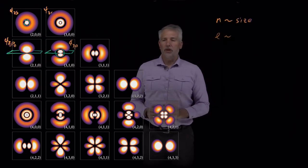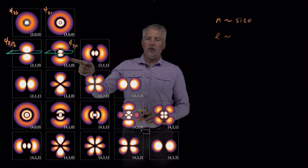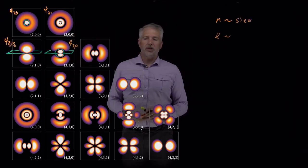L, the quantum number, so the main difference between, let's say, an s orbital and the p orbital is not the size of the orbital but the shape of the orbital.